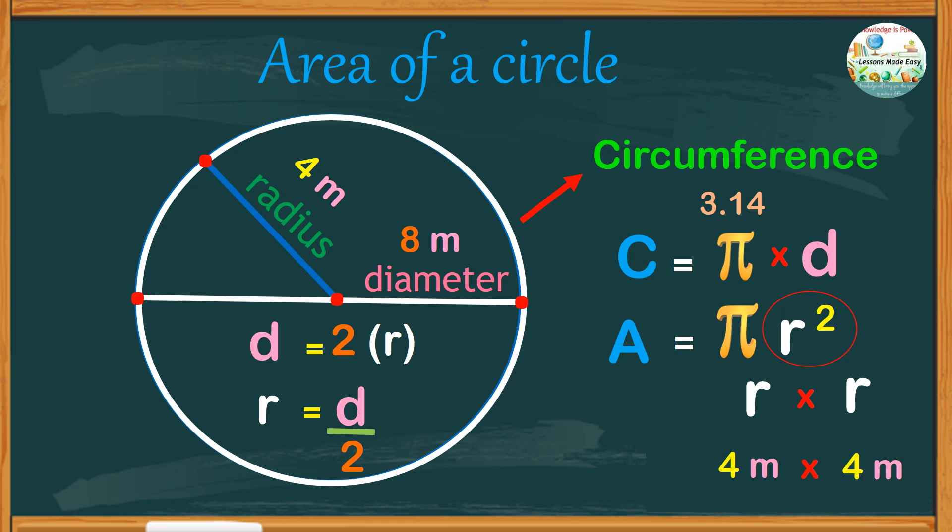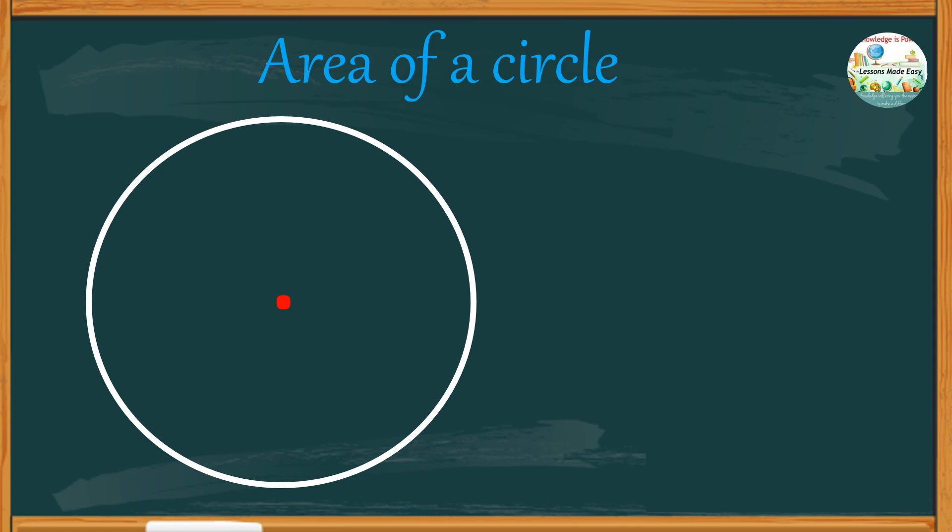And to clearly understand the concept of finding the area of a circle, let's try another illustration. Take a look at this circle with a radius of 5 centimeters. If we have to find the area, we would go with the formula area equals pi r squared.